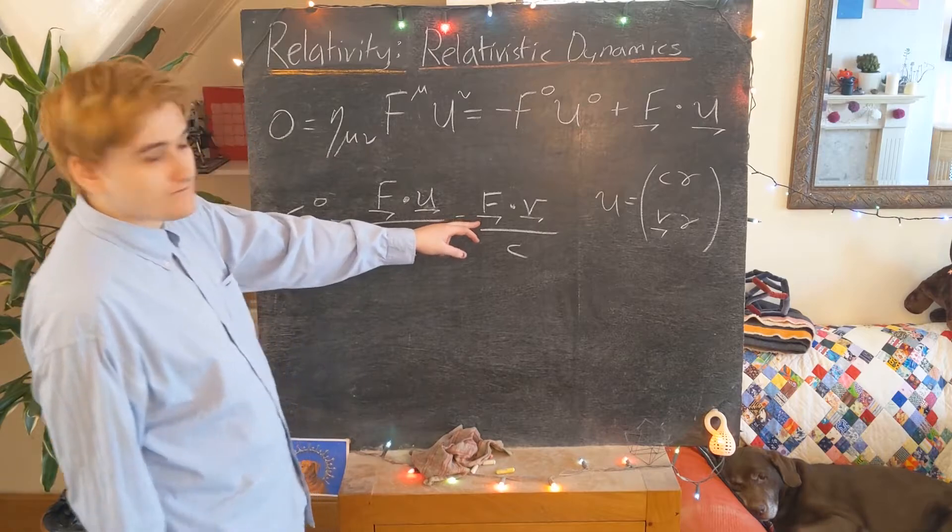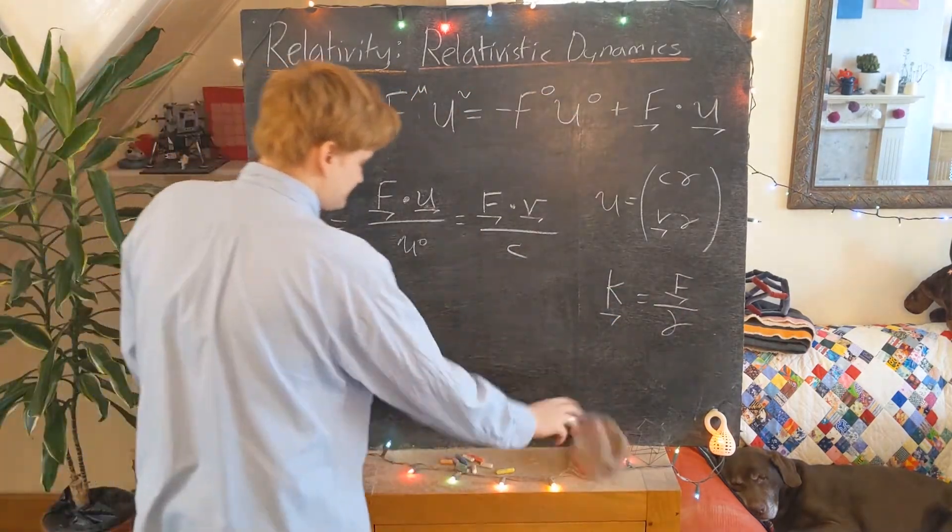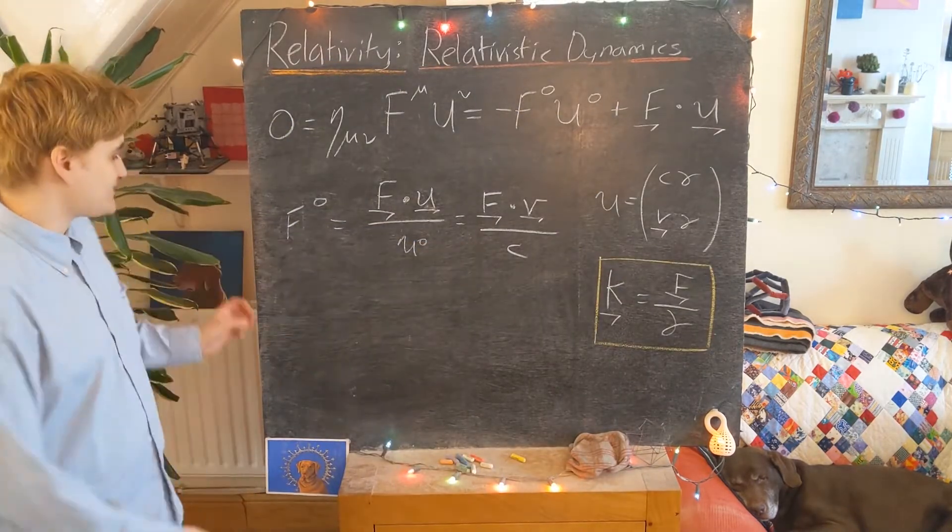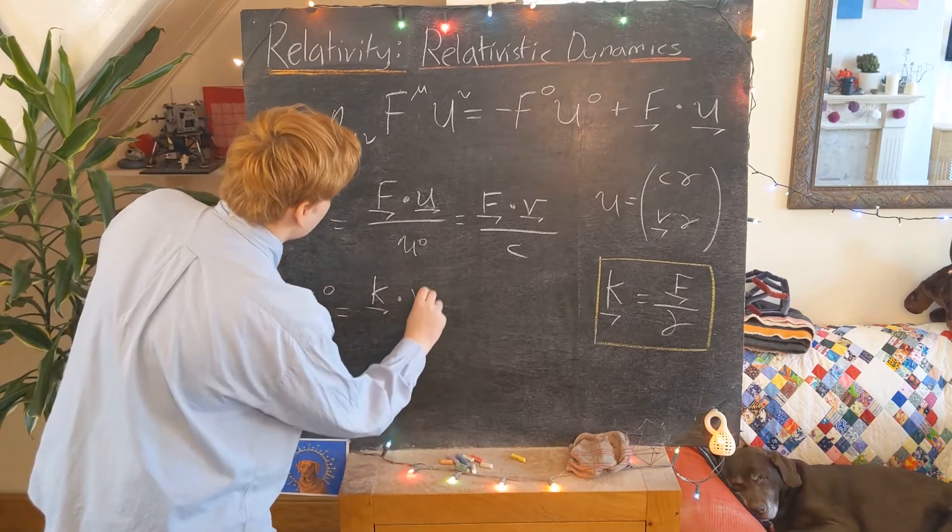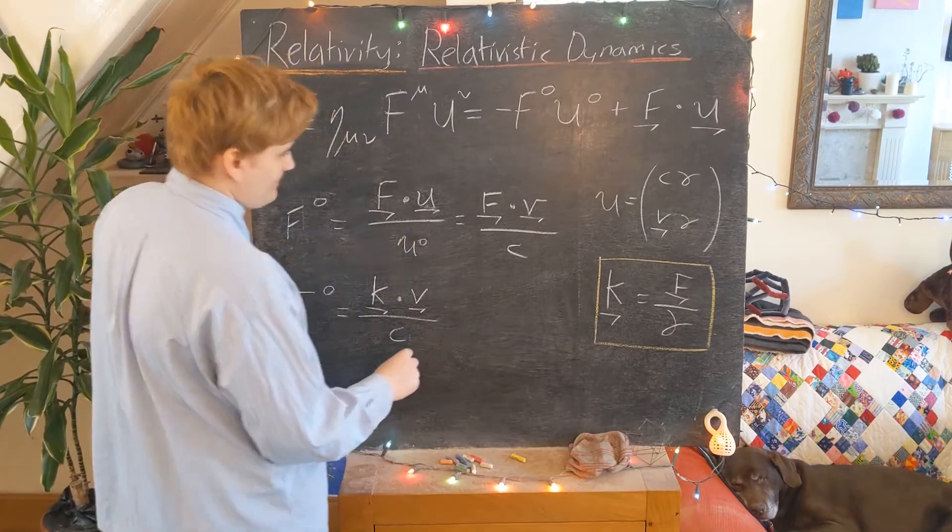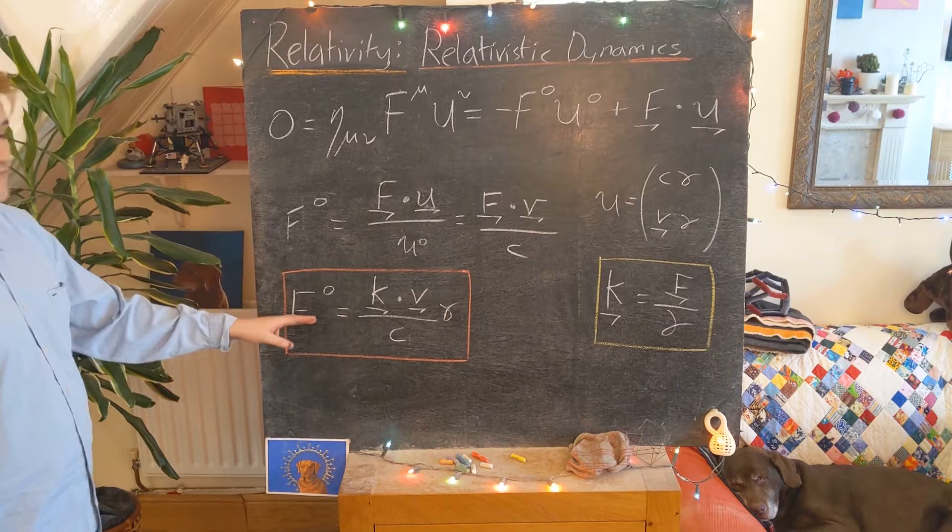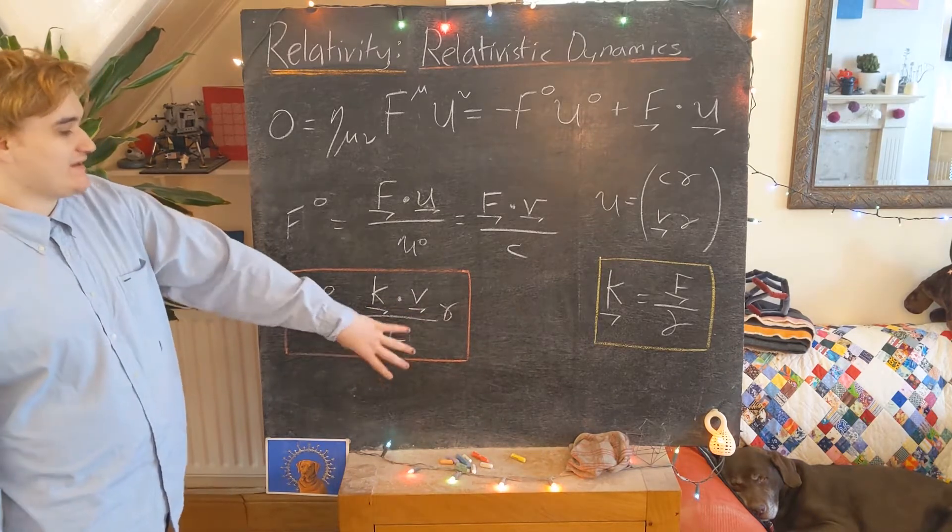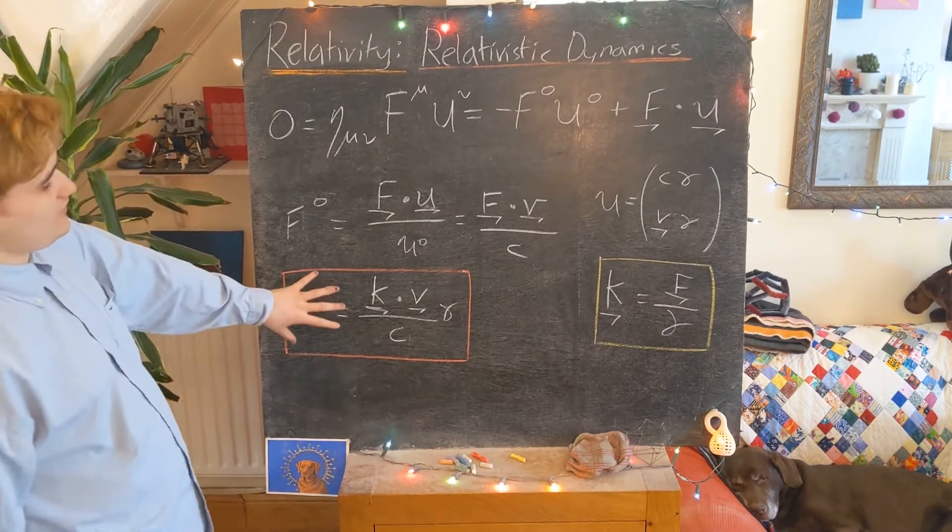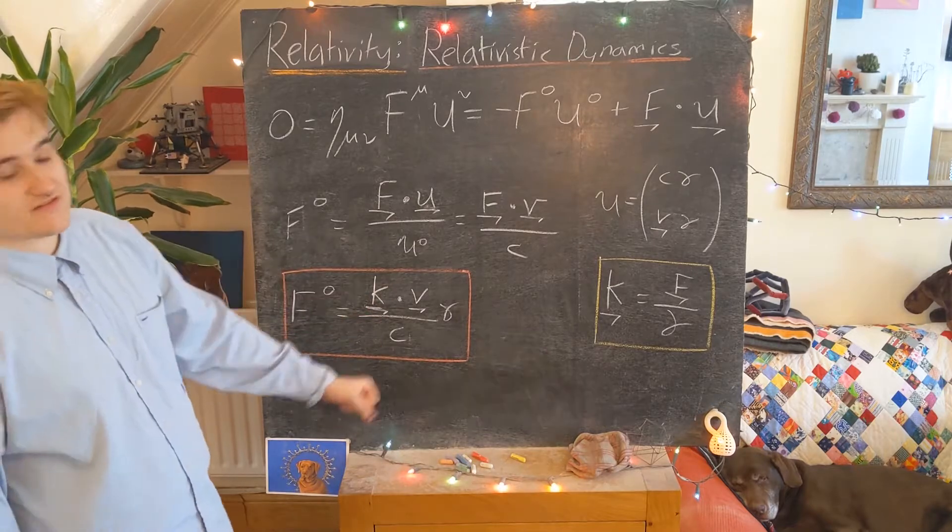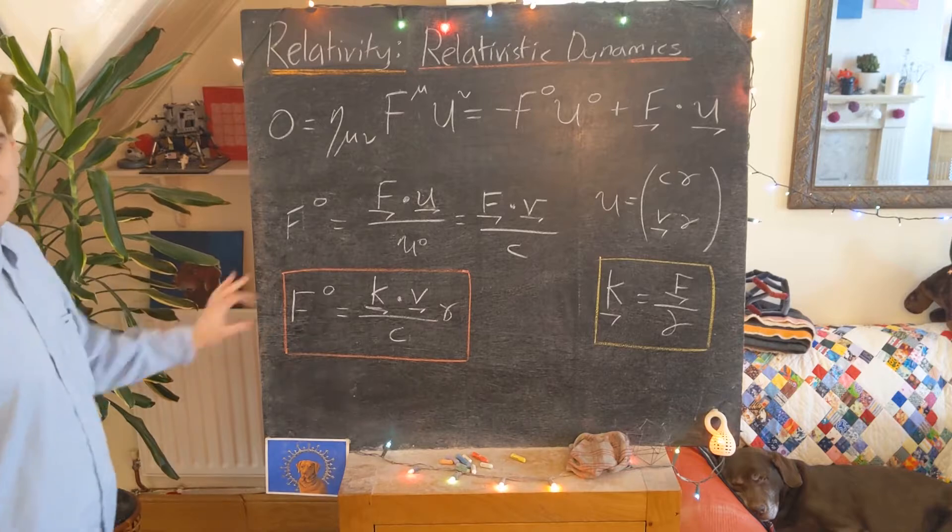And now finally we know that we can express the spatial part of the force vector using the effective force. This was how we realized the effective force. So I can just rewrite this now in terms of the effective force, which is going to give me k dot v over c, and then there's a factor of gamma. So what we've now effectively realized is that this time component of the four-force is now completely specified or completely constrained by the effective force and the coordinate velocity.